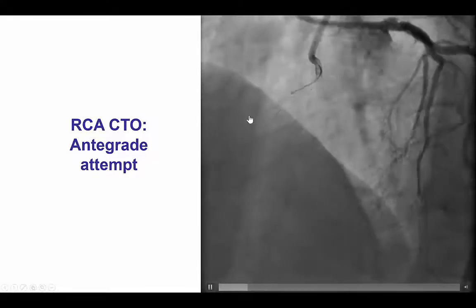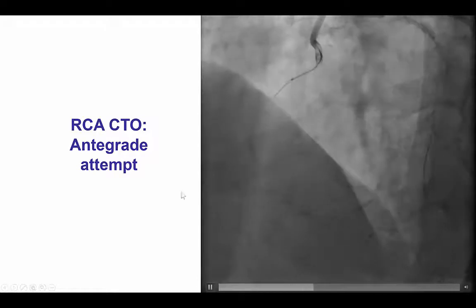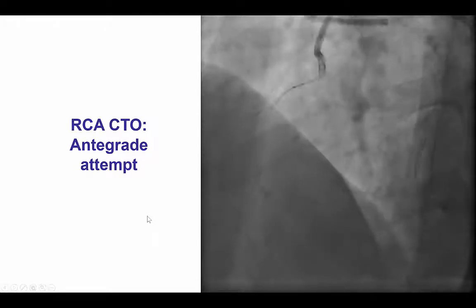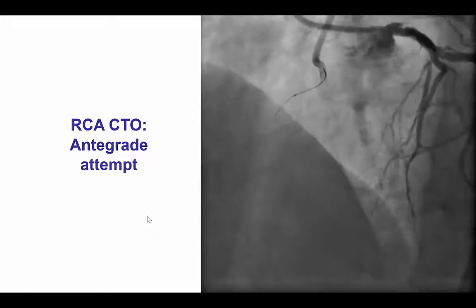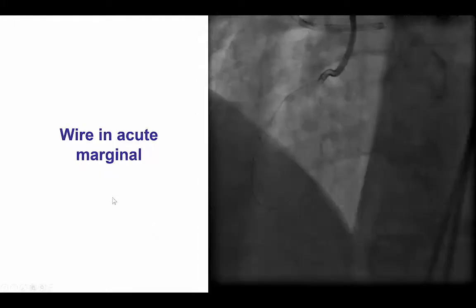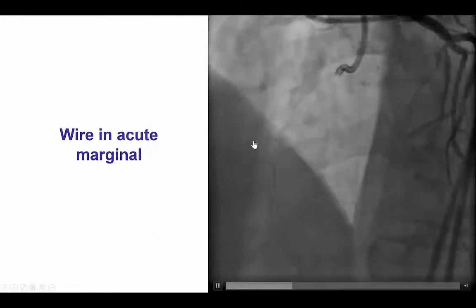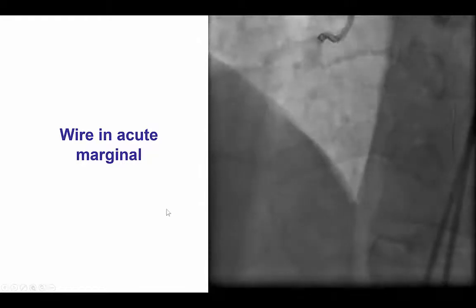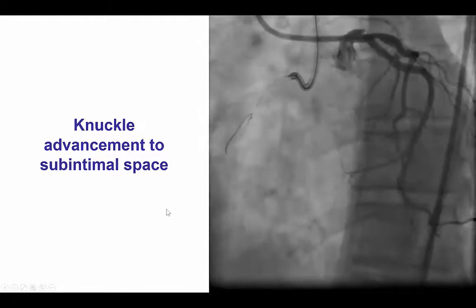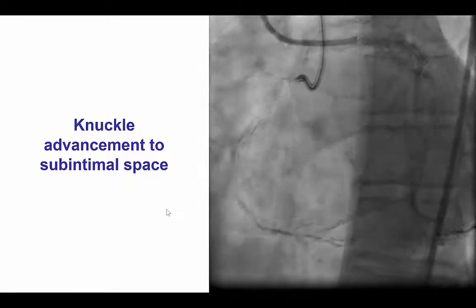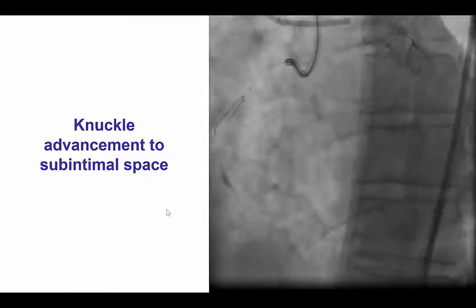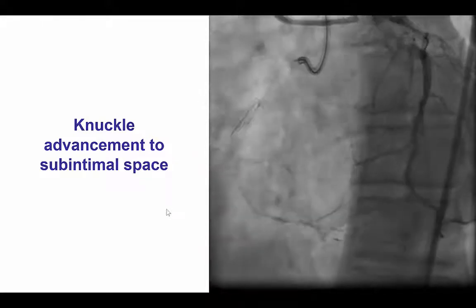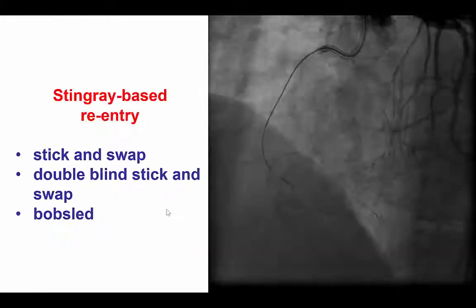We then tried to recanalize the right coronary. We performed antegrade wire escalation through a Micro-14 microcatheter and a Pilot 200 guide wire. The wire did advance; however, contralateral injection showed that the wire was actually in an acute marginal branch. During attempts at crossing, the wire went subintimal, and eventually we used a knuckle technique to advance the guide wire to the distal right coronary artery.